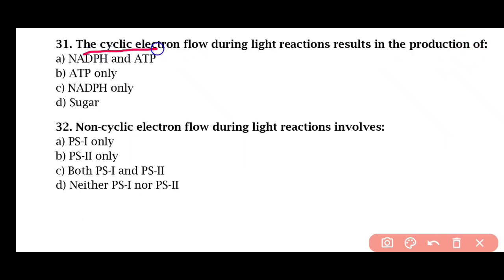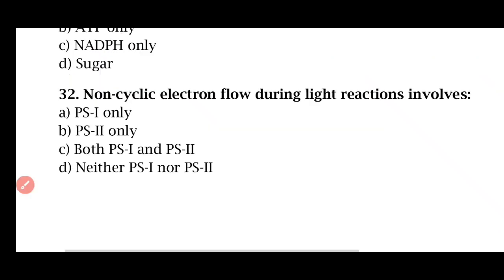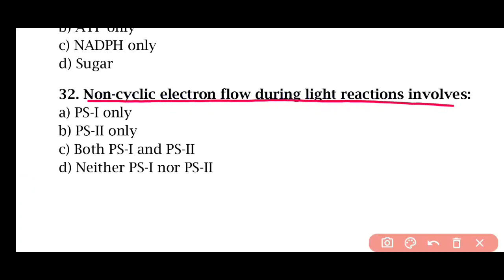Question 31: Cyclic electron flow during the light reaction results in the production of — NADPH, ATP only, NADPH only, or sugar only. The correct answer is option B: ATP only. Question 32: Non-cyclic electron flow during the light reaction involves — PS1 only, PS2 only, both PS1 and PS2, or neither. The correct answer is option C. Non-cyclic electron flow involves both photosystem 1 and photosystem 2.